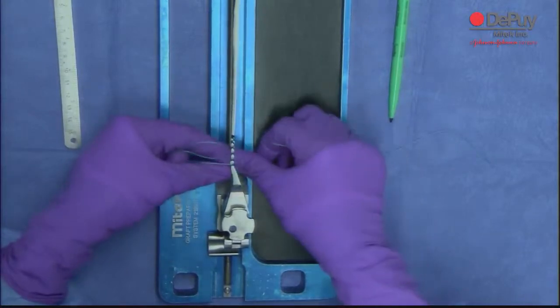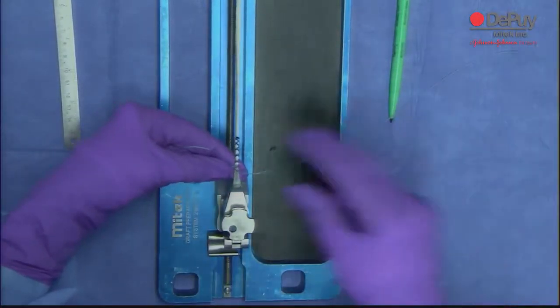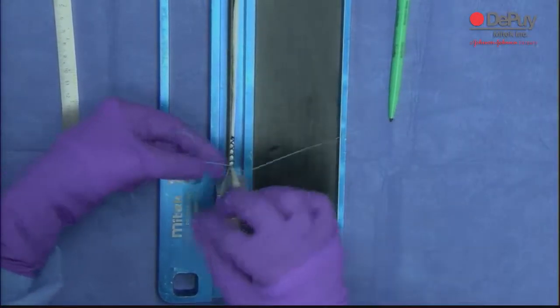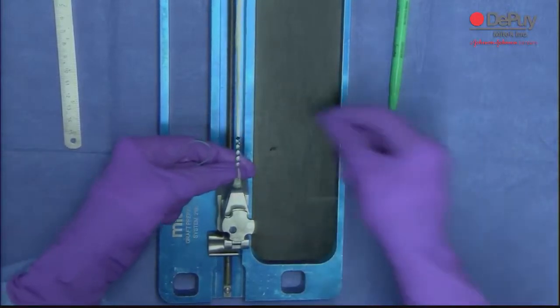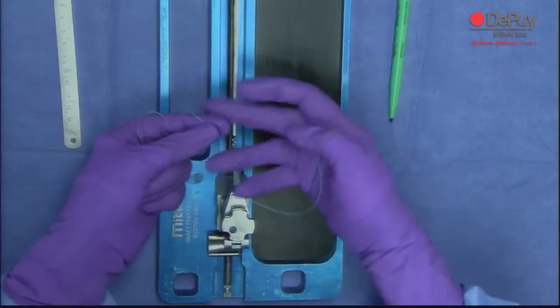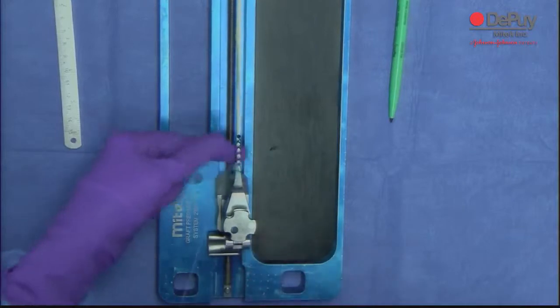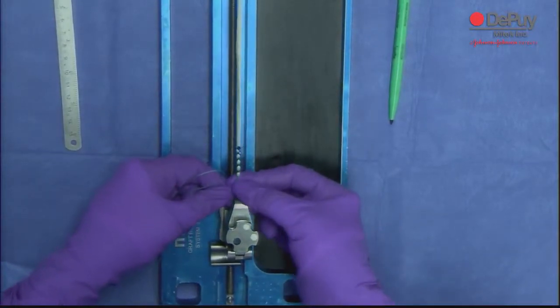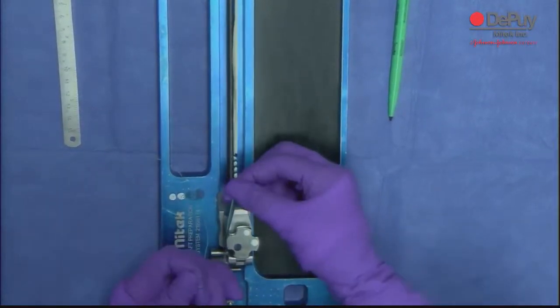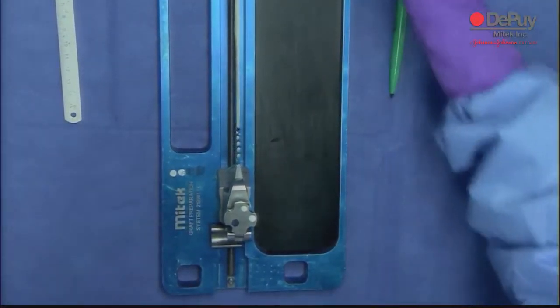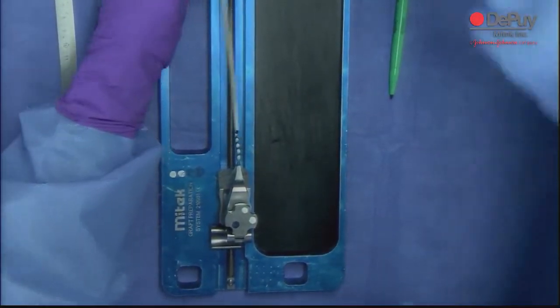Now again, suture underneath, on top, suture underneath. Bring this underneath, through here, tighten it up. This allows the tension to continually be pulled on this graft. So we're done with this.